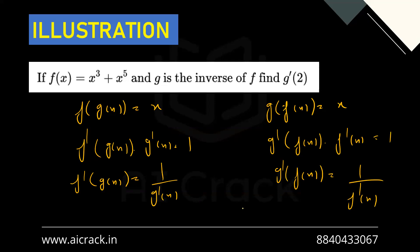We need to find g'(2). Using g'(f(x)) = 1/f'(x) is more useful here. If we used the other form and put x=2, we'd need g(2), which requires computing the inverse of a complicated function directly — not feasible. Instead, we find x such that f(x) = 2. For x=1: f(1) = 1³ + 1⁵ = 2. So g'(2) = g'(f(1)) = 1/f'(1).